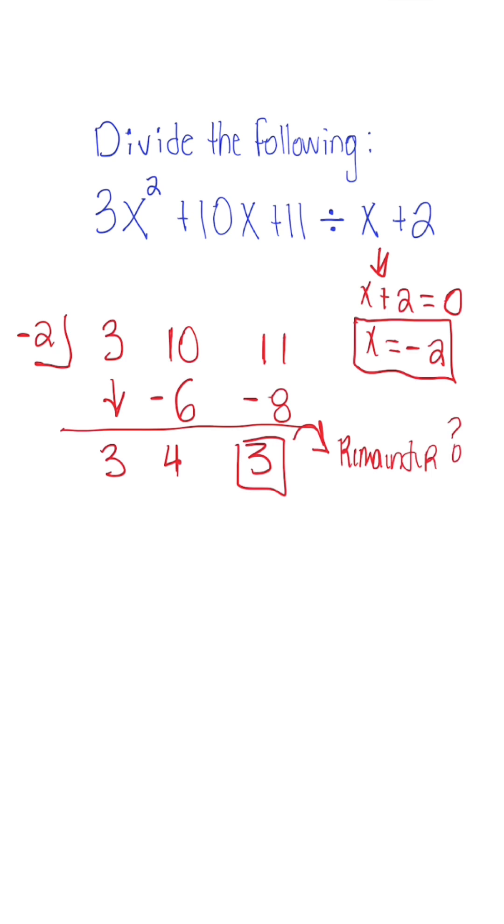So when we have a remainder, that means that x plus two is not a factor for this trinomial expression. For it to be a factor, it would have to divide into it evenly without a remainder.